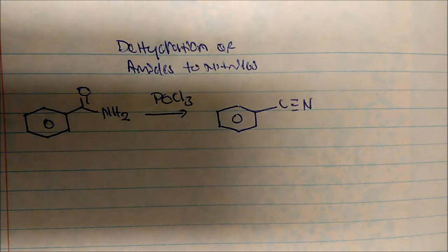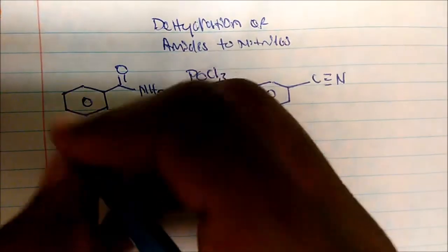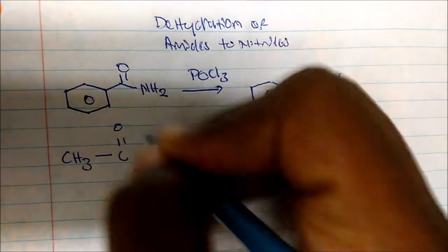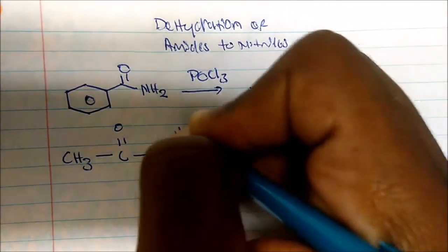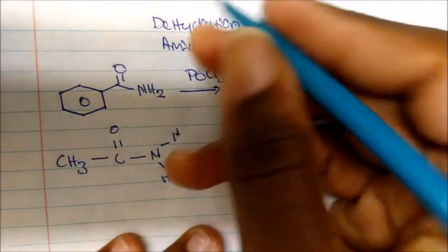Now we need to know the mechanism for this one, so I'm going to take a more simpler amide. So if I take this amide, it has a nitrogen that has two hydrogens.